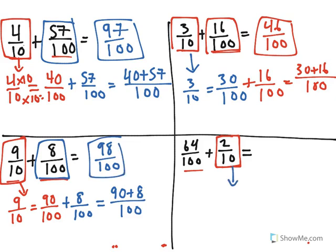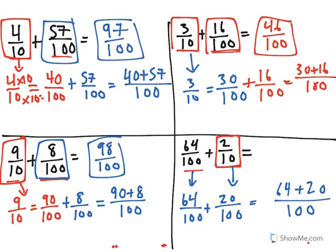And continuing with the last one here, 2 tenths is equal to 20 one hundredths. We're going to add 64 one hundredths there. And we're going to get 64 plus 20. Add the numerators. Denominator remains the same for our correct answer of 84 one hundredths.